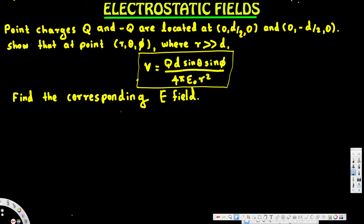Let's look at this problem. The question asks: point charges q and negative q are located at (0, d/2, 0) and (0, -d/2, 0). Show that at point (r, θ, φ) where r is greater than d, V is equal to qd·sinθ·sinφ over 4πε₀r². Then find the corresponding electric field.